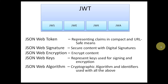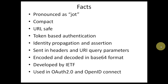JSON Web Encryption is a specification for how to encrypt the JSON Web Token. JSON Web Keys is a specification to represent the keys in JSON format for signing and encryption of the JSON Web Token. JSON Web Algorithm is a specification for the cryptographic algorithms and identifiers which are used for signing and encryption.